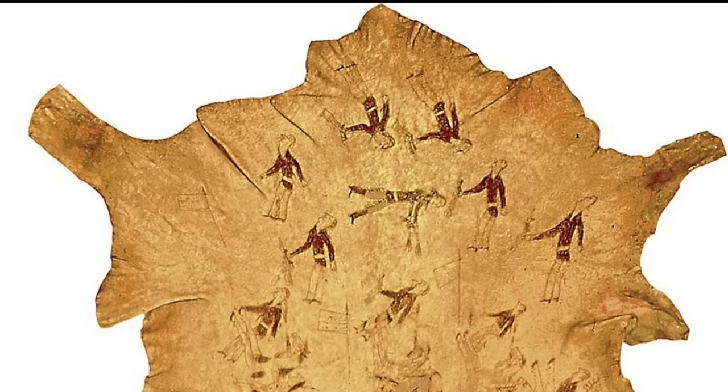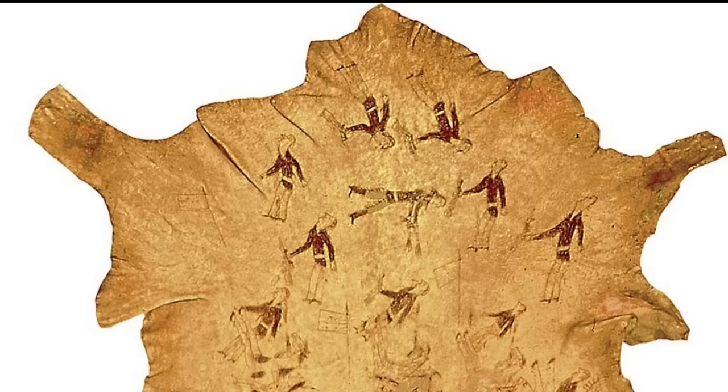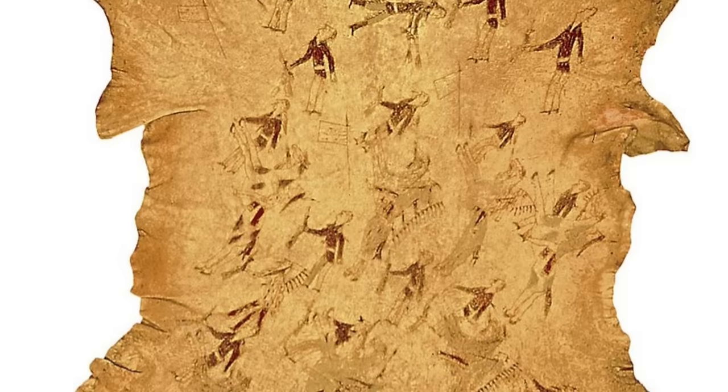The gold rush would lead to the Great Sioux War of 1876, in which Custer was killed at the June 1876 Battle of the Greasy Grass, and after which the U.S. government would annex the Black Hills and permanently establish reservations for the Sioux.